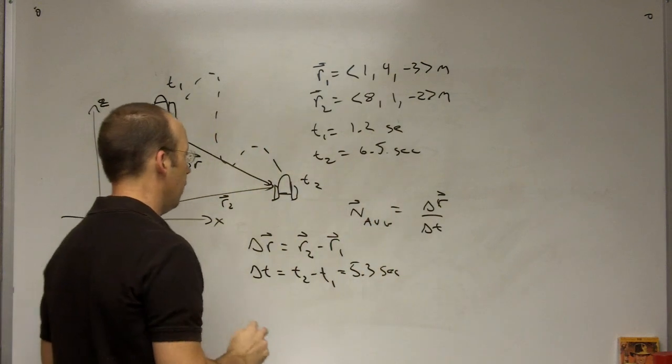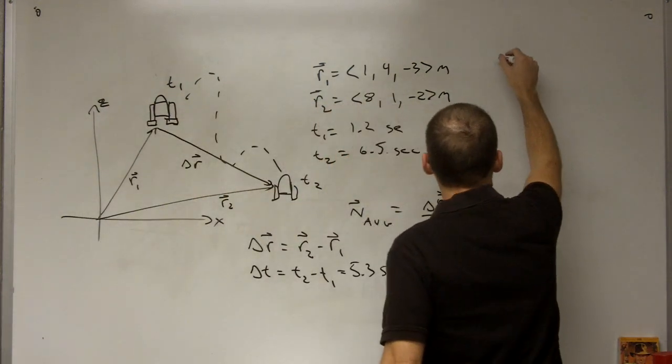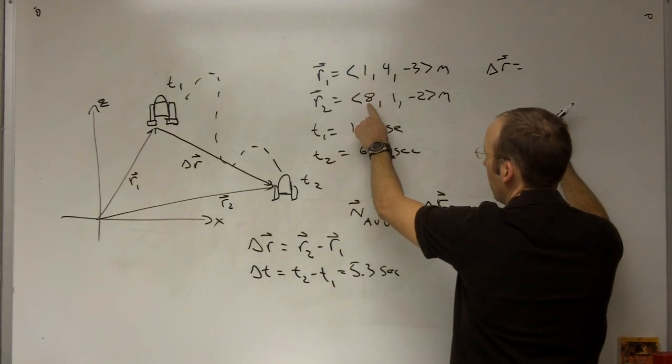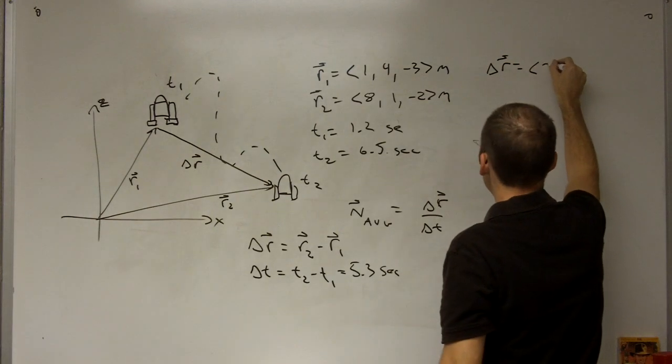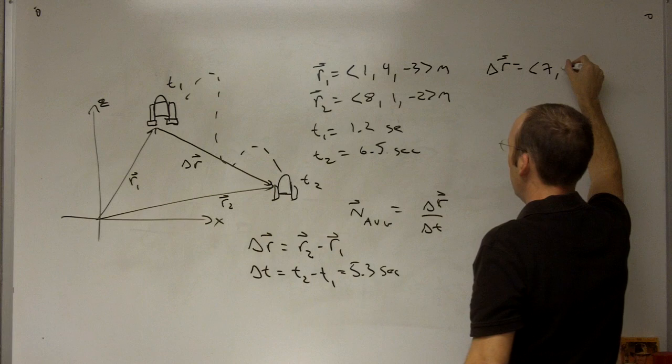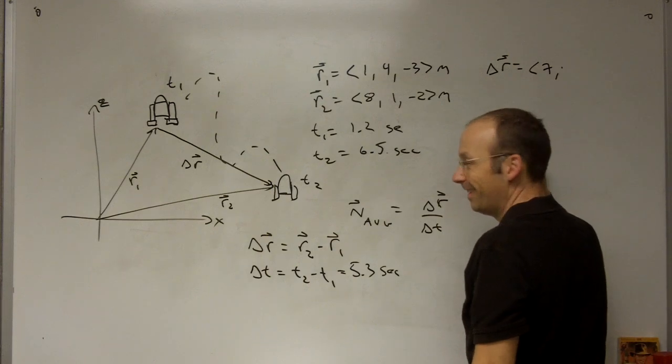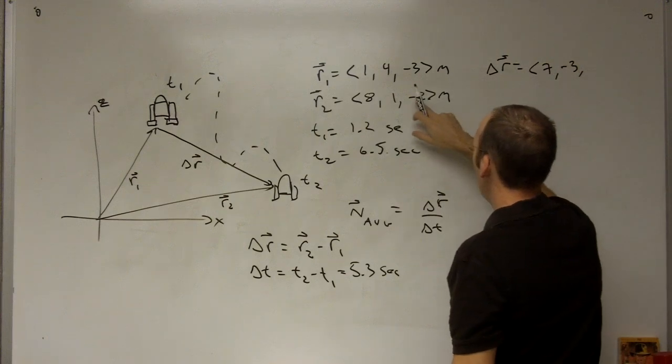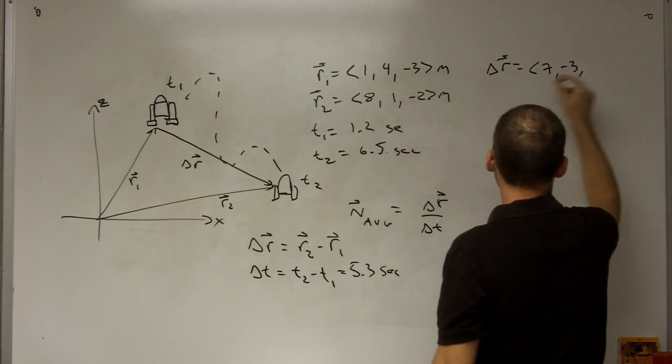Now all I need to do is calculate delta R. Delta R is going to be R2 minus R1. So it's 8 minus 1, 7. 1 minus 3, negative... 1 minus 4 is negative 3. And then negative 2 minus negative 3 is going to be 1.